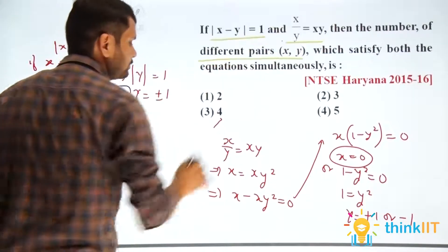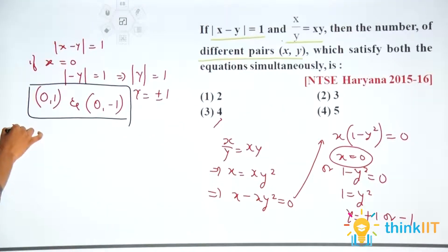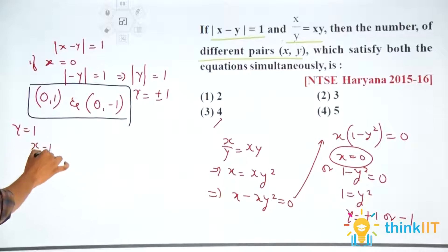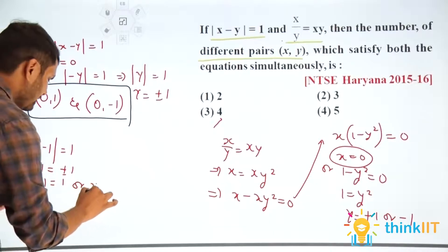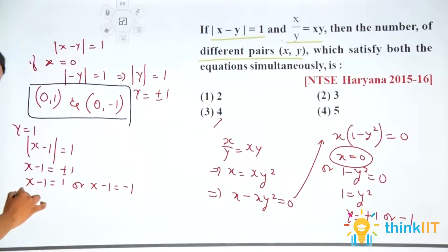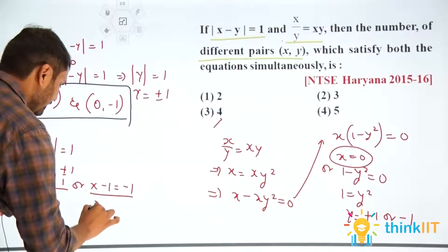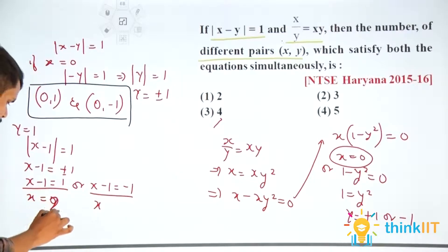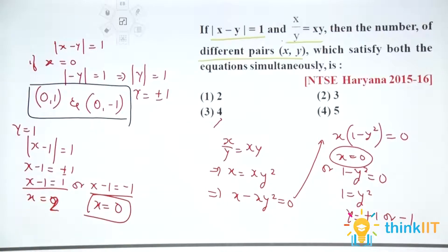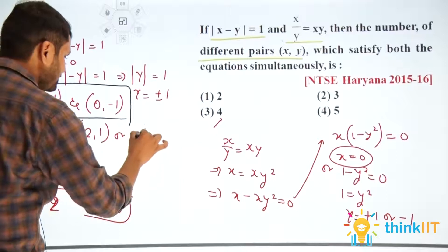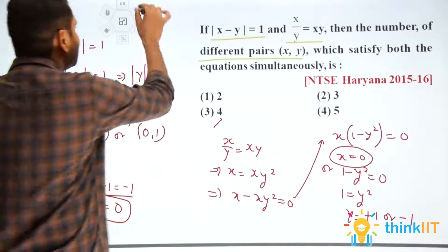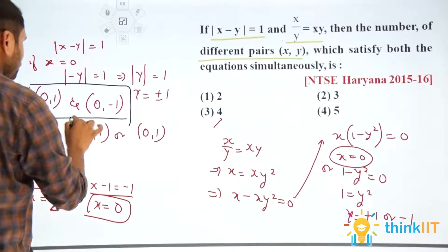Now let's think about y is equal to 1. We have two values of y: plus 1 and minus 1. If y equals 1, we get mod of x minus 1 is equal to 1. This gives x minus 1 equals plus or minus 1. Solving: x minus 1 equals plus 1 gives x equals 2, and x minus 1 equals minus 1 gives x equals 0. So from y equals 1 we get two solutions: (2, 1) and (0, 1).